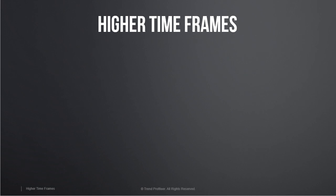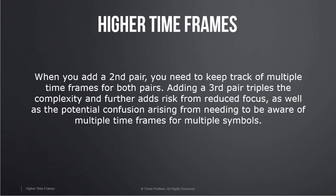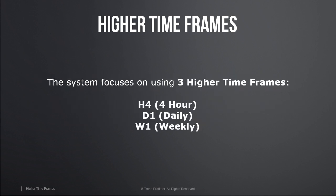Thinking in multiple time frames is difficult. When you add a second pair you need to keep track of multiple time frames for both pairs. Adding a third pair triples the complexity and further adds risk from reduced focus, as well as the potential confusion arising from needing to be aware of multiple time frames for multiple symbols. In a nutshell, if you try to do this manually you can either send yourself crazy or expend a lot of mental energy and possibly make things even more confusing.